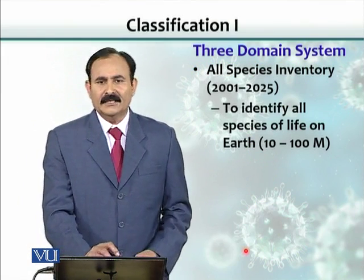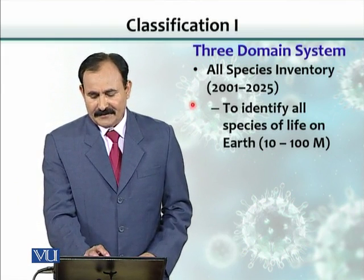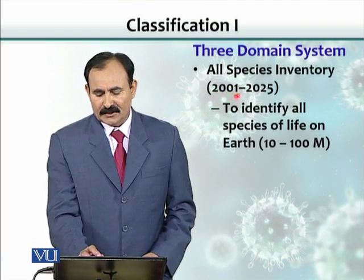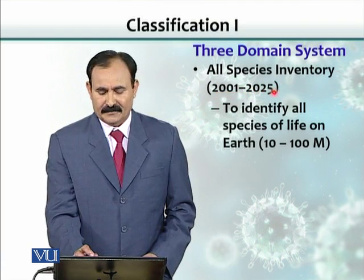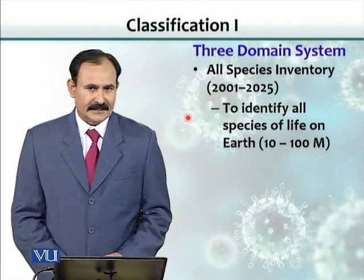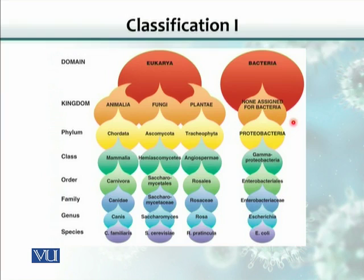Based on this three-domain system, scientists launched a program called the All Species Inventory from 2001 to 2025, with the plan that all species in the world would be classified and categorized. The three-domain system puts organisms into three groups: Bacteria, Archaea, and Eukarya. Eukarya includes fungi, animals, and plants. This pictorial of the three-domain system shows Eukarya, Bacteria, and Archaea as the three separate domains at the top.